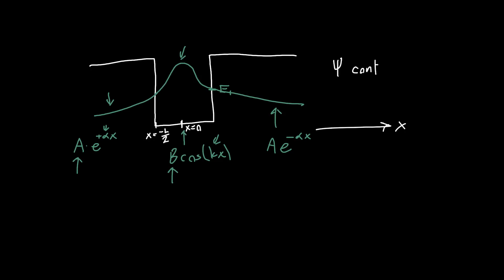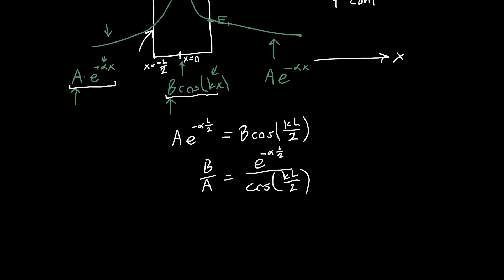So A e to the minus alpha l over two has to equal B times cosine of kl over two. And so now we know alpha, we know k, we know l, we can solve for B over A. It's just e to the minus alpha l over two over cosine kl over two. And so that perhaps is not terribly satisfying for you because well we just have a ratio, we don't actually have B or A.